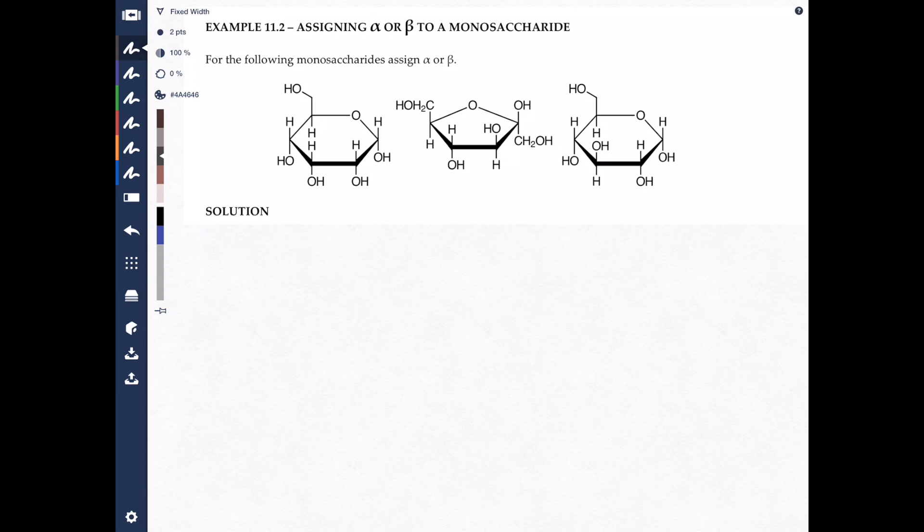Today, we're looking at example 11.2, assigning alpha and beta to monosaccharides. And here's the question here. We have three different monosaccharides, three different representations of sugars, and we're going to assign alpha and beta to this.